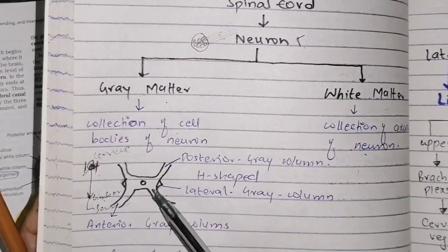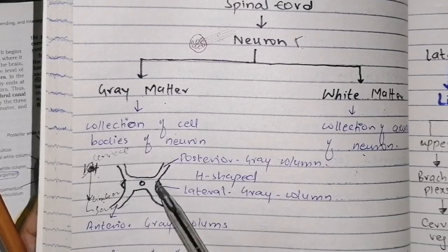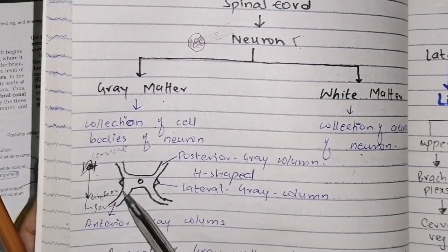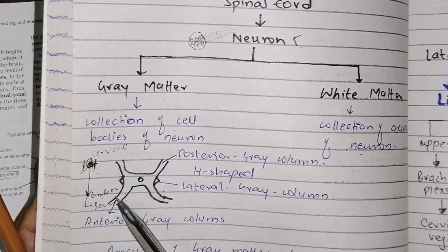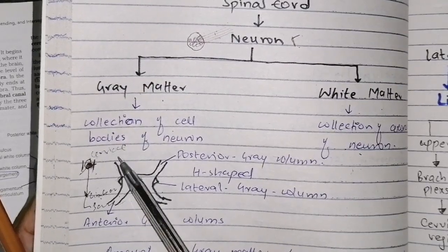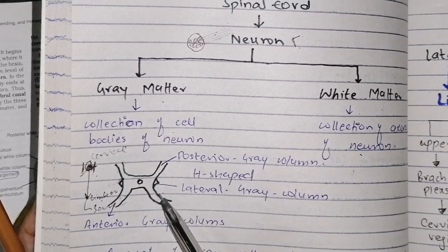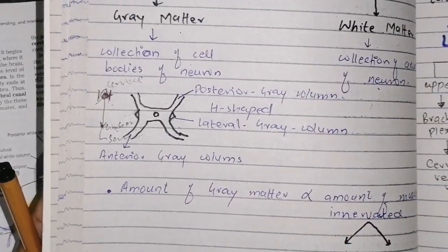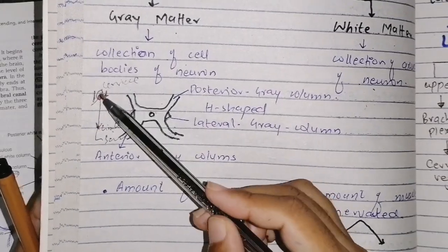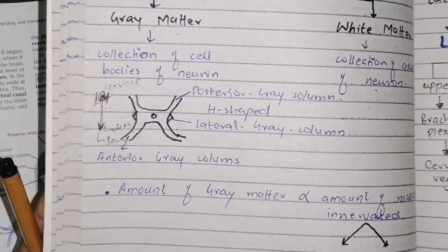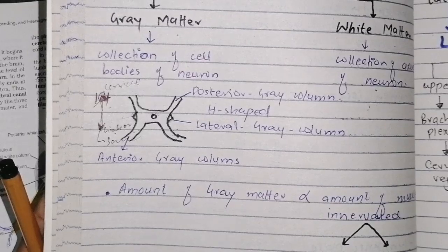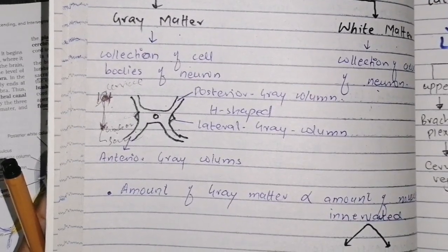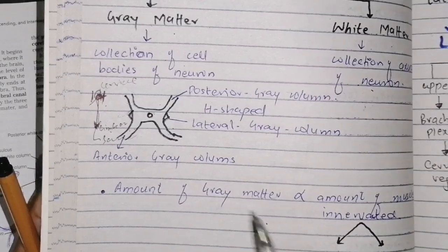We have anterior gray matter, posterior gray matter, and lateral gray matter. An important point to remember is that the amount of gray matter varies along the length of the spinal cord, and it is directly proportional to the amount of innervation arising from that region.